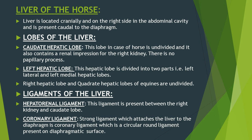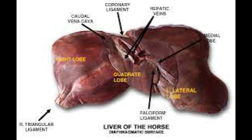Now let's move to the liver of horse. The liver of horse is located cranially and caudal to the diaphragm like that of ox and dog. It contains the same four lobes: left hepatic lobe, right hepatic lobe, quadrate hepatic lobe, and caudate hepatic lobe. In the horse, only the left hepatic lobe is divided into left lateral hepatic lobe and left medial hepatic lobe; the remaining lobes are undivided. The quadrate hepatic lobe contains only a quadrate process with a renal impression for the right kidney, and there is no papillary process in the equine's liver.